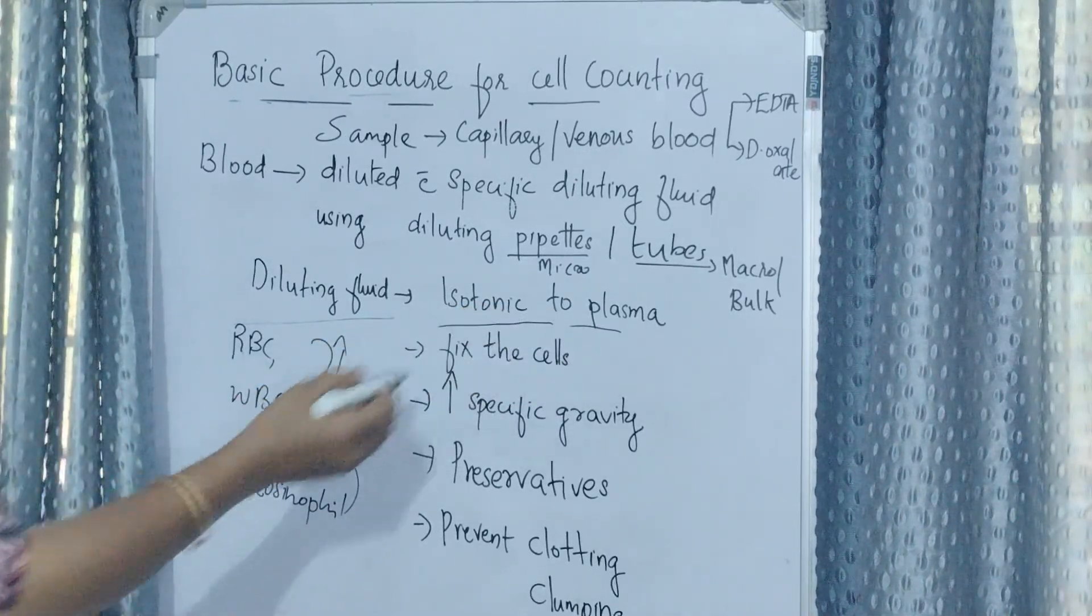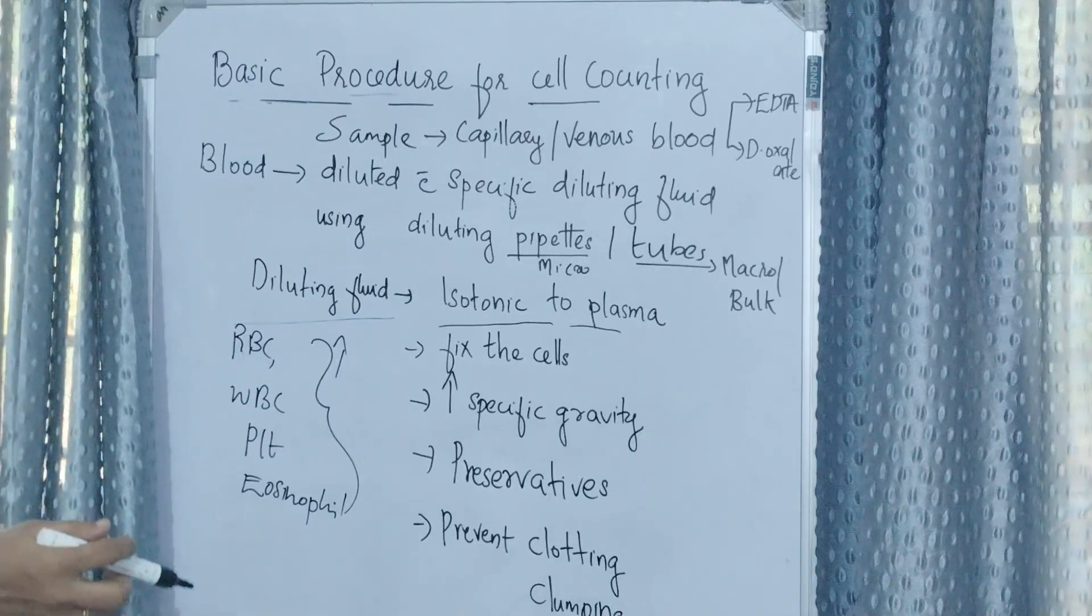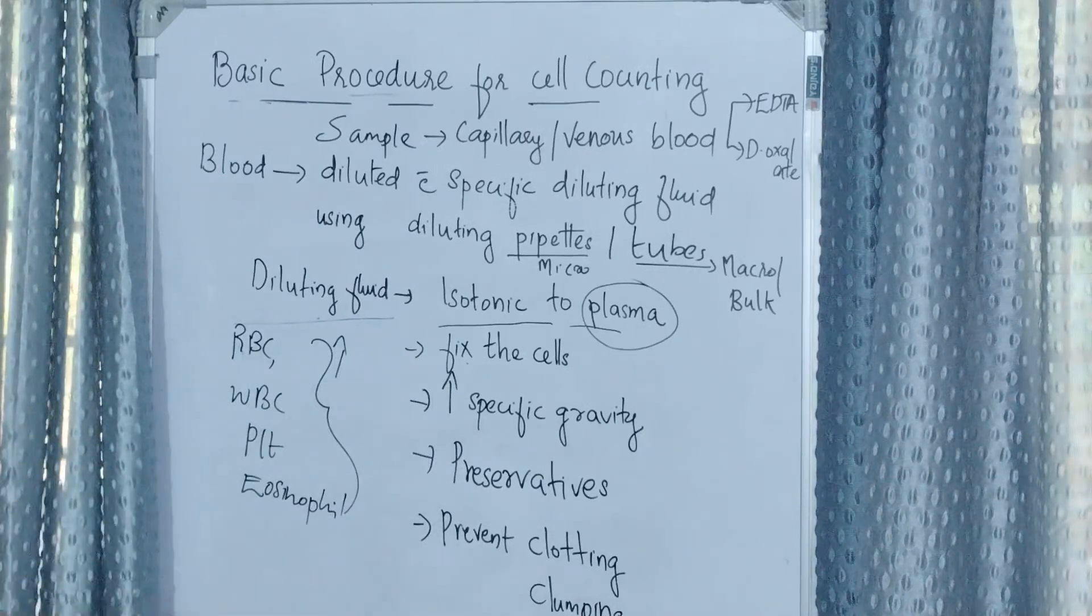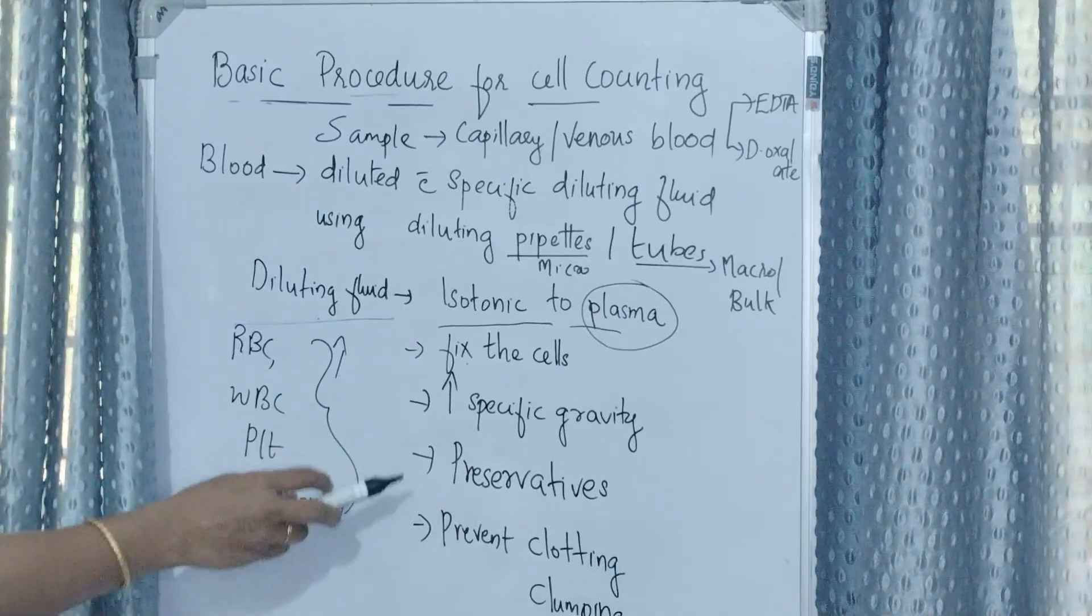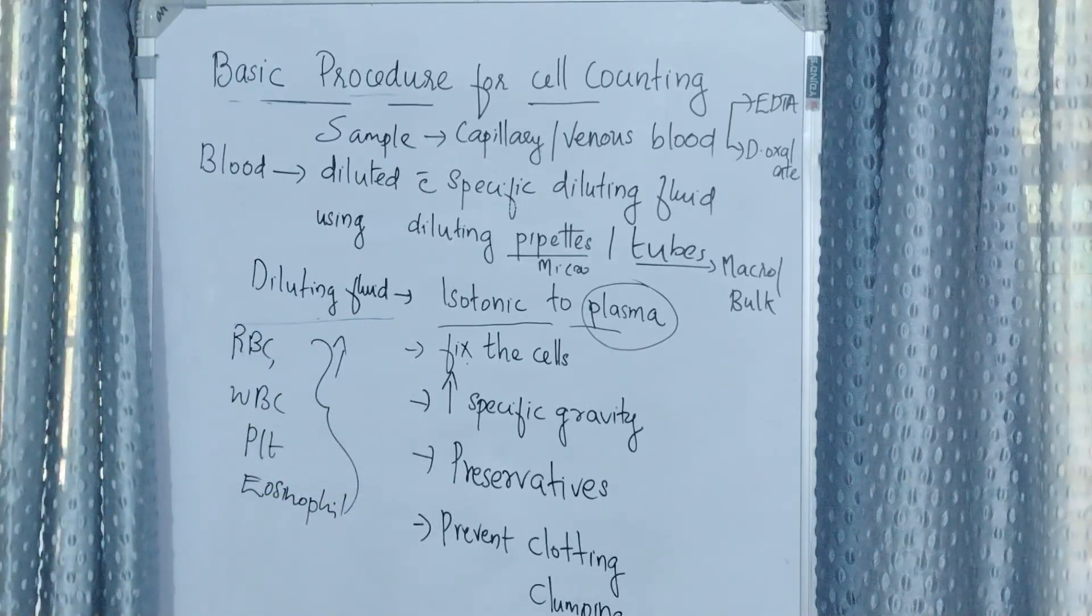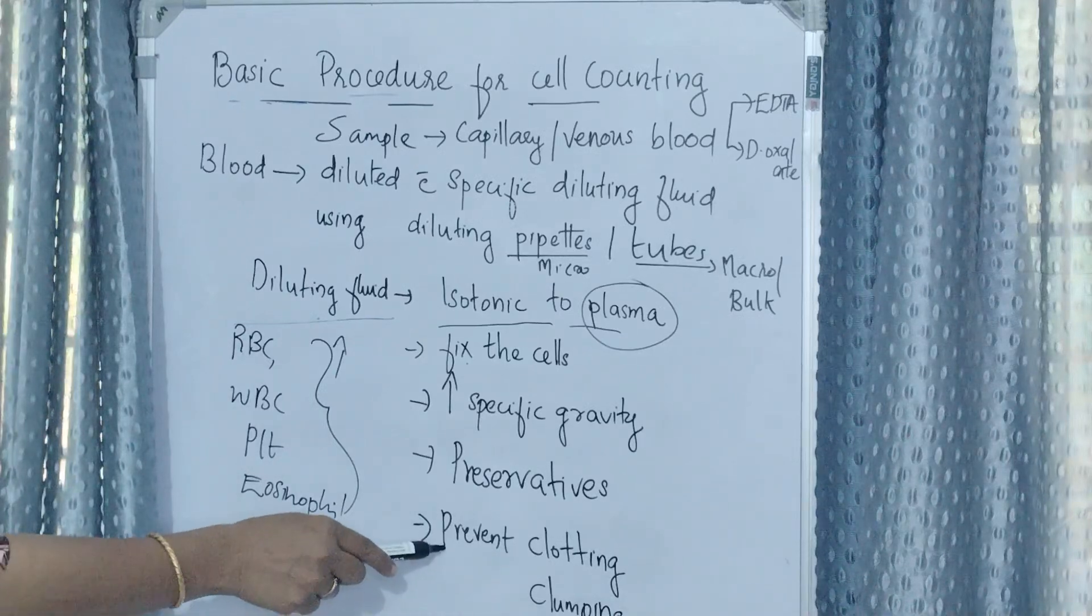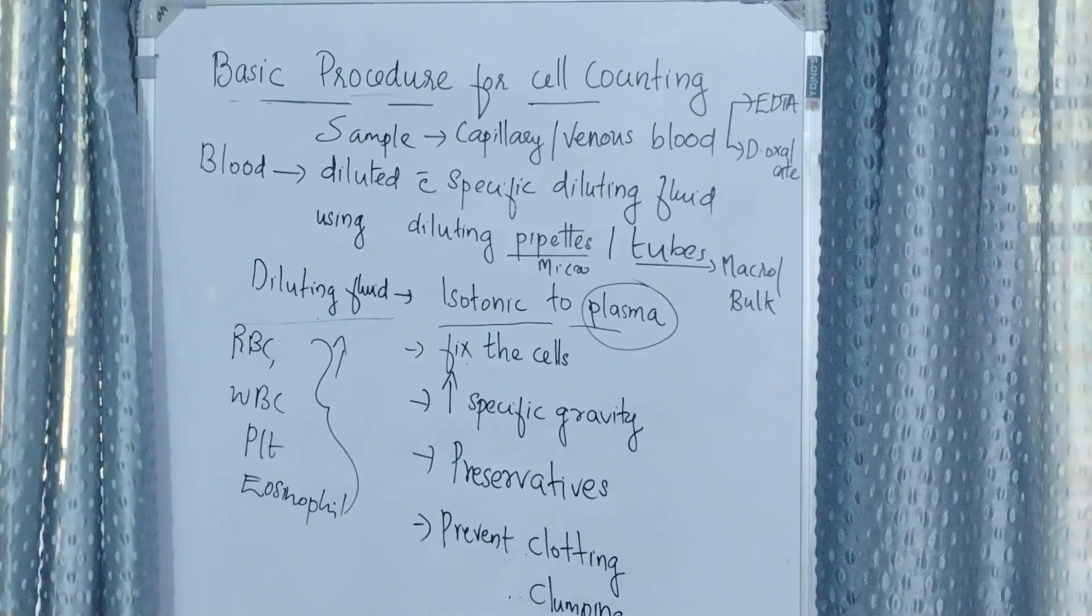The diluting fluid should be isotonic to plasma, fix the cells, and have high specific gravity to avoid aggregation. It should contain preservatives to prevent bacterial or fungal growth and prevent clotting, clumping, and rouleaux formation.